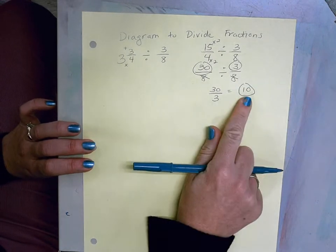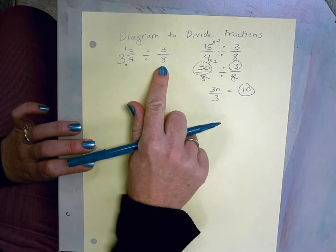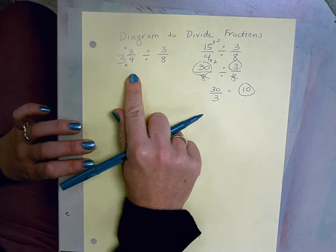What that tells us is there's 10 groups of 3/8 inside of 3 and 3/4.